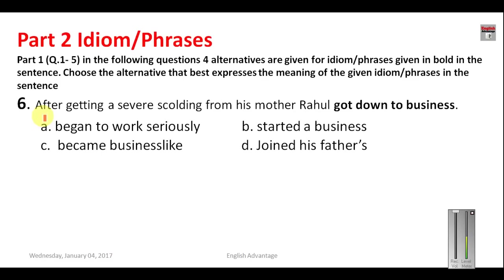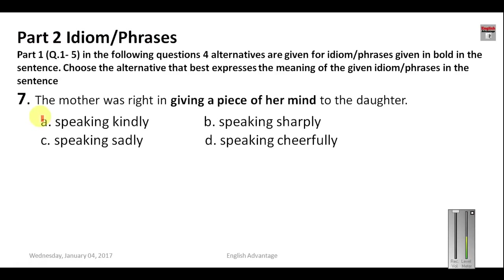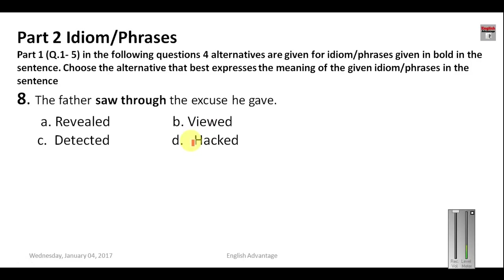Now we start Part 2 on idioms. One sentence is given with a part written in bold, and you have to find the meaning of that bold part. Question 6: 'After getting a severe scolding from his mother, Rahul got down to business.' 'Got down to business' means he began to work seriously, so your answer is A. Question 7: 'The mother was right in giving a piece of her mind to the daughter.' 'Giving a piece of her mind' means to scold somebody; since scolding is not an option, your answer is B — speaking sharply.